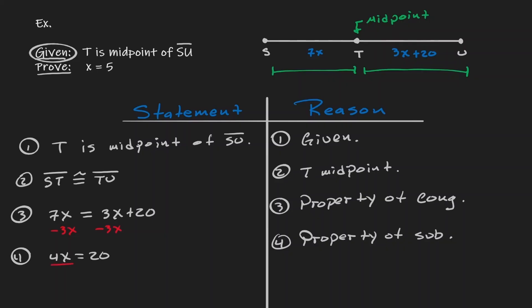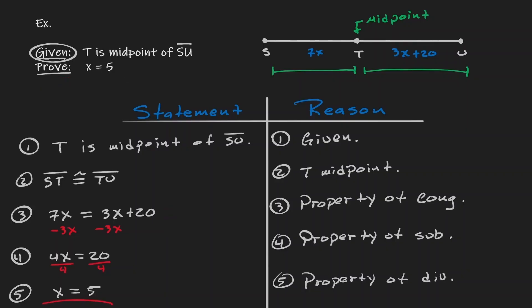Next, dividing both sides by 4 gives us X equals 5, using the division property. Notice we're pretty much done here, because we wanted to prove that X has a value of 5, and that's the last statement in our proof. Whatever your last statement is, it should be the statement you want to prove. Every single step we took had a reason to back it up. Therefore, we can claim we are done proving that X has a value of 5.